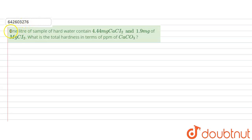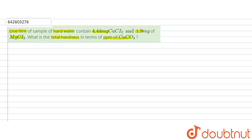The question is: one liter of a sample of hard water contains 4.44 milligrams of calcium chloride and 1.9 milligrams of magnesium chloride. What is the total hardness in terms of ppm of calcium carbonate?